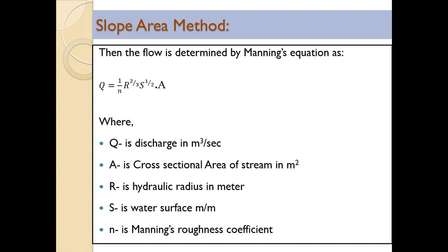The flow is determined using Manning's equation: Q = (1/n) × R^(2/3) × S^(1/2) × A, where Q is discharge in cubic meters per second, A is the cross-sectional area of the stream in square meters, R is the hydraulic mean radius in meters, S is the water surface slope in meters per meter, and n is Manning's roughness coefficient, which mainly depends on the nature of the channel cross-section.